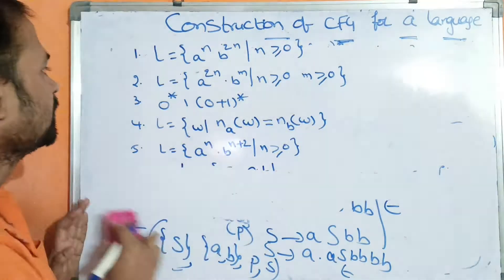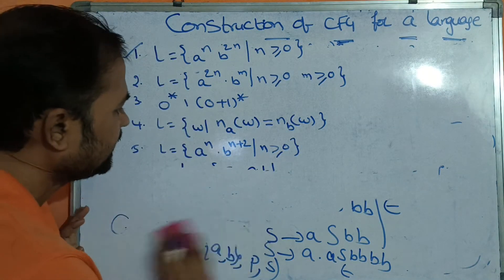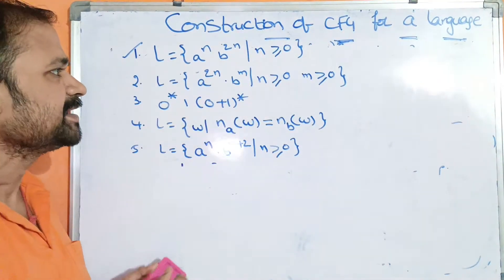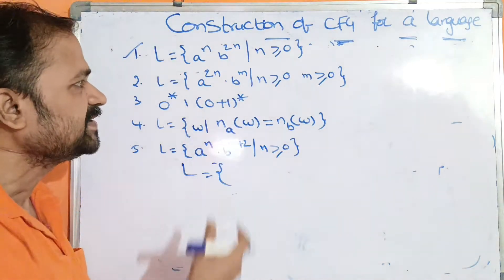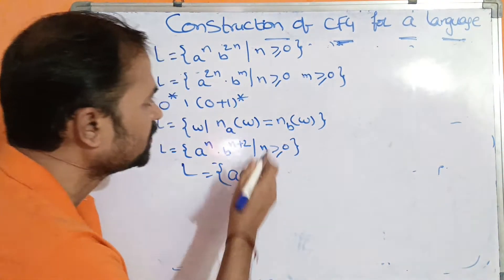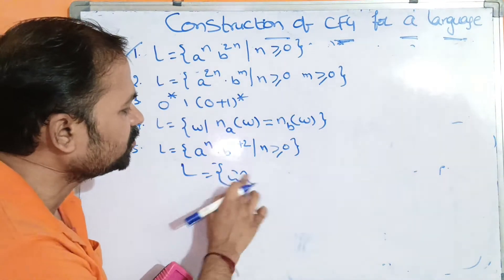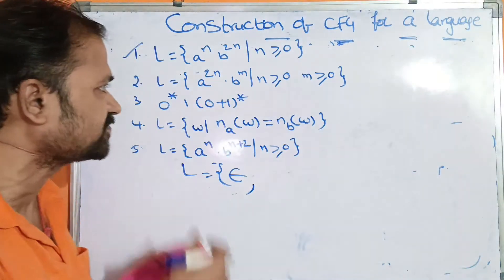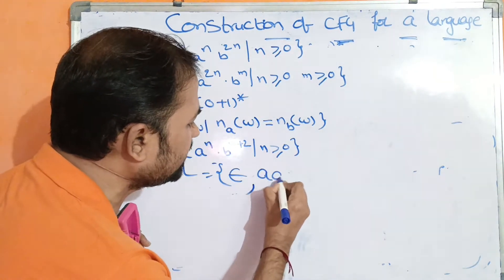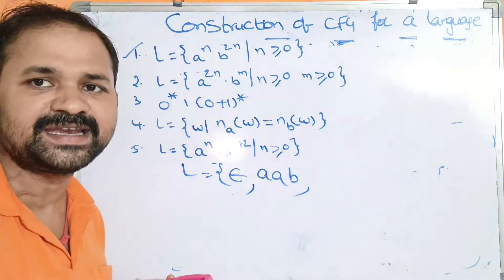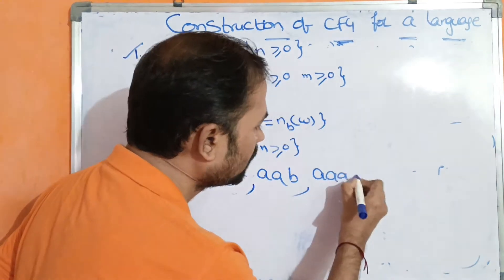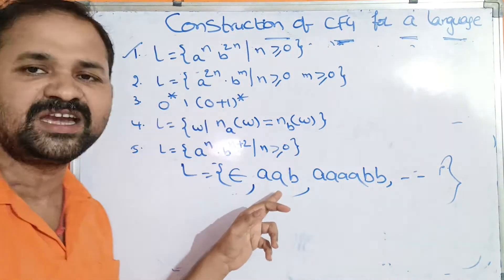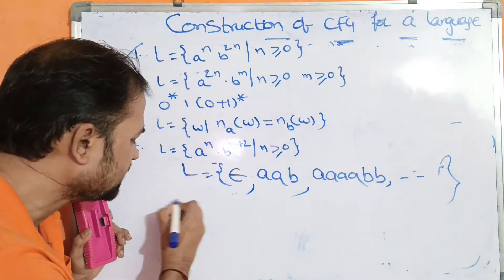Now let us see the second example. L is equal to a power 2N into b power M, such that N is greater than or equal to 0 and M is greater than or equal to 0. When N=0, M=0, we get epsilon. If N=1 and M=2, then a power 2 is 2 A's and b power 2 is 2 B's. For every 2 A's, we have some B's.